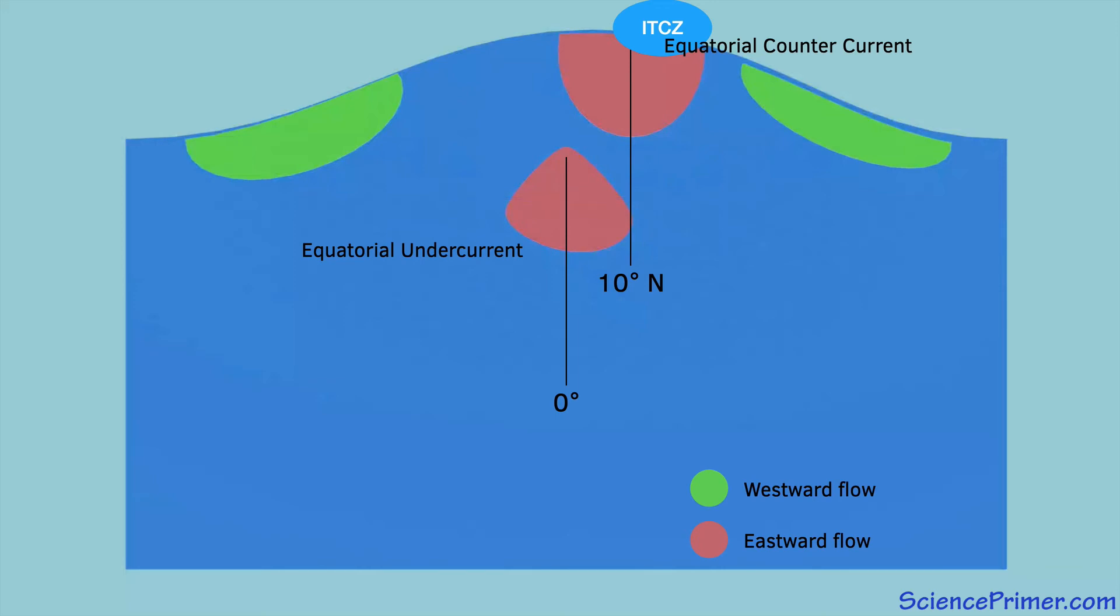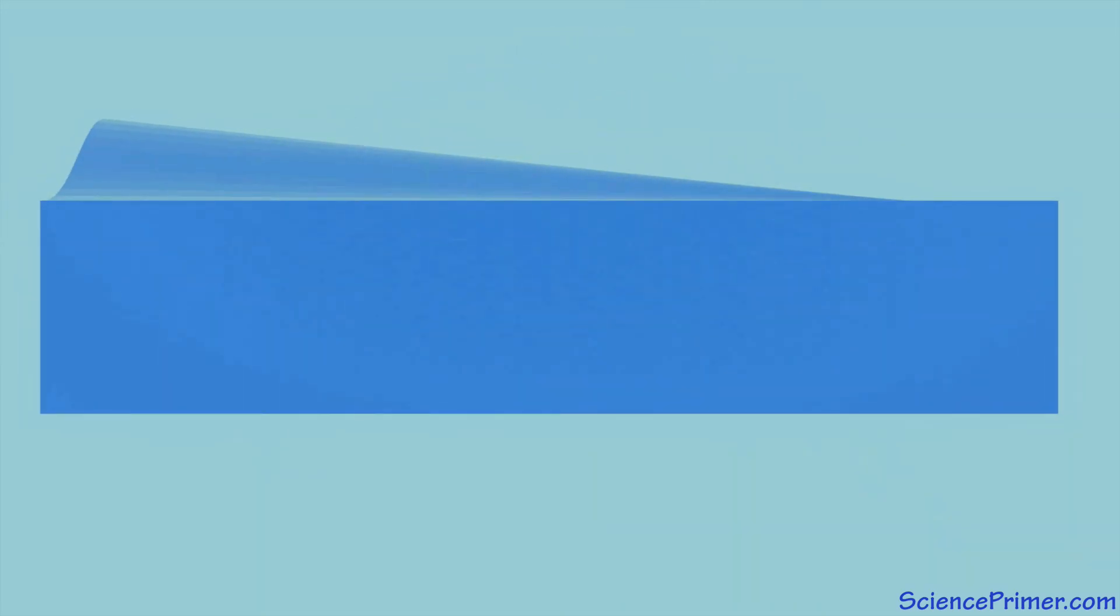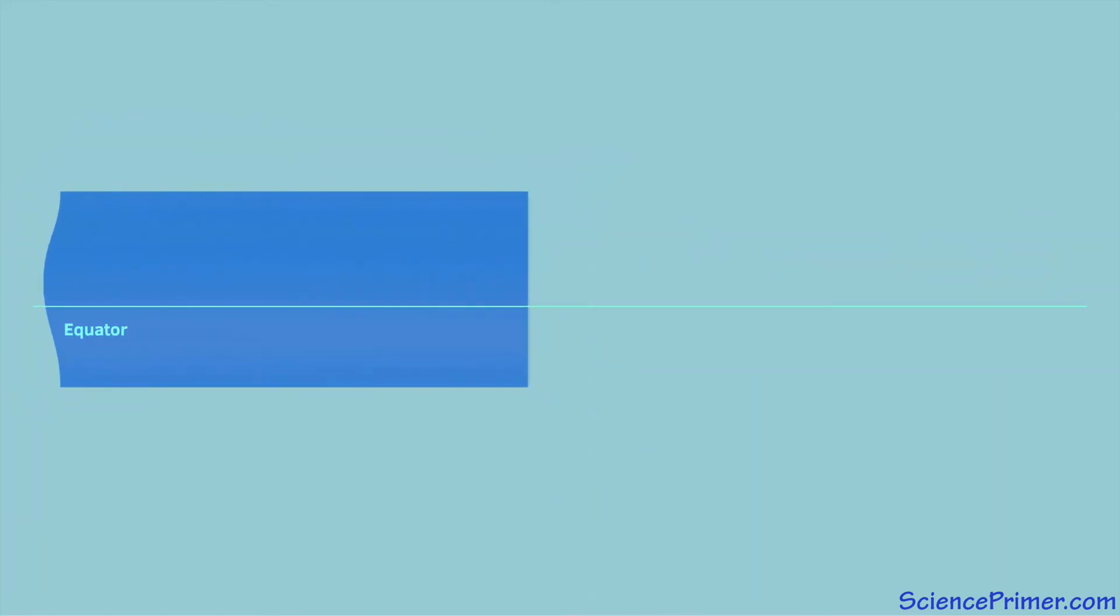The equatorial undercurrent is a narrow, fast-flowing current. Its location right on the equator strongly influences its behavior. Because it is on the equator, the bulk of the current experiences no Coriolis deflection.